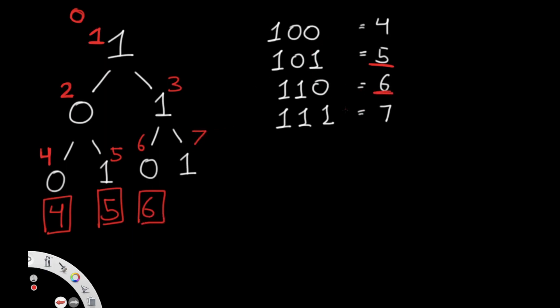And finally path 1,1,1 gives us 7. So doing this, we found all our path values: 4, 5, 6, and 7. The final answer is just adding them all up: 4+5 = 9, 6+7 = 13, and 9+13 = 22, which is the value we're looking for.